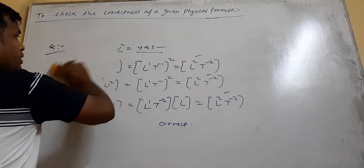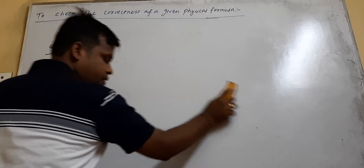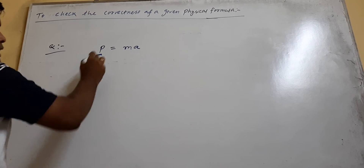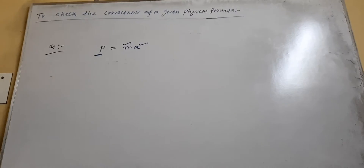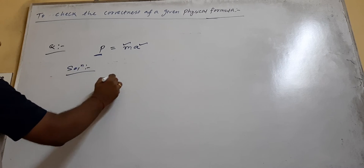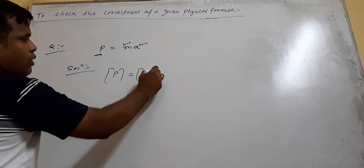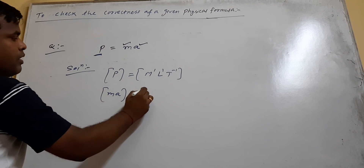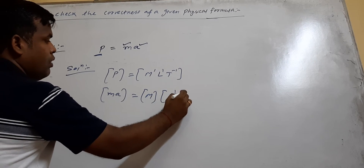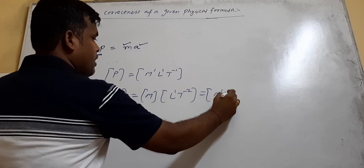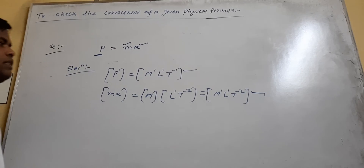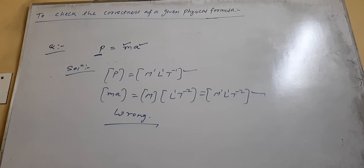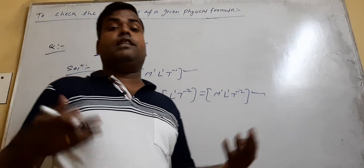Now come to another question: P equals mA, where P is momentum, m is mass, and A is acceleration. We have to verify it. P — momentum — has dimensional formula M¹L¹T⁻¹. And mA: mass is M¹, multiplied by acceleration L¹T⁻², gives M¹L¹T⁻². You see, the dimensions are not the same. So the formula is wrong.